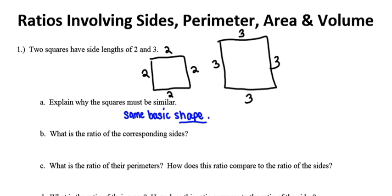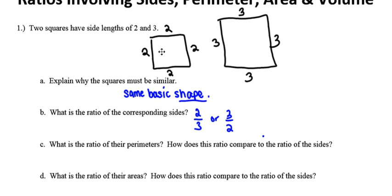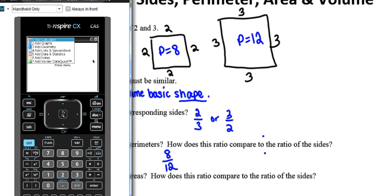Part B: what is the ratio of the corresponding sides of our particular squares? We can write this ratio either 2 to 3 or 3 to 2. It doesn't specify whether we should do larger to smaller or smaller to larger. For our practical purposes here in this video, I'm going to write small to large. Part C wants us to figure out the ratio of their perimeters. The perimeter of the smaller square is 8, and the perimeter of the larger square is 12, so this ratio is going to be 8 to 12.